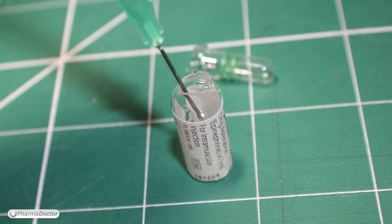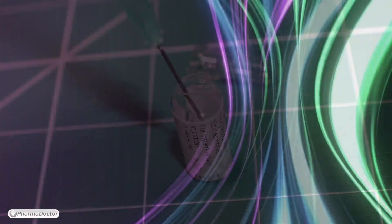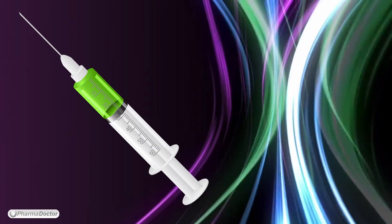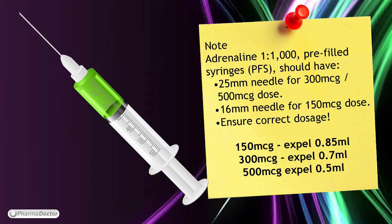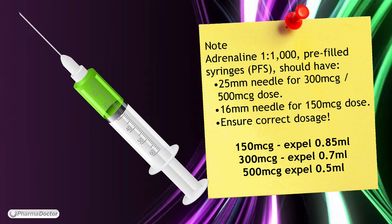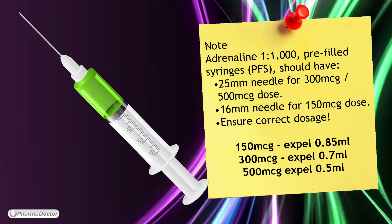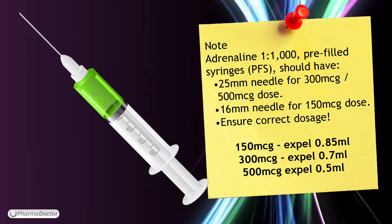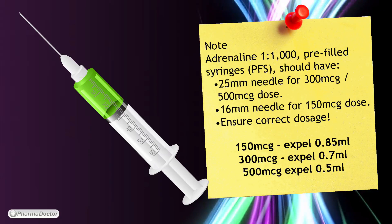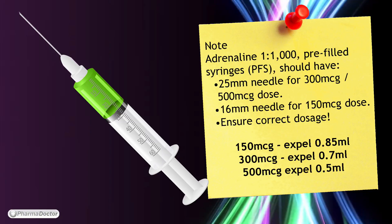However, if you do not feel confident with this, you can use second line formulations such as a pre-filled syringe. You must ensure these pre-filled syringes meet Resuscitation Council guidance. Most notably, they must have a 25 mm syringe needle for the 300 µg dose or a 16 mm needle for the 150 µg dose.